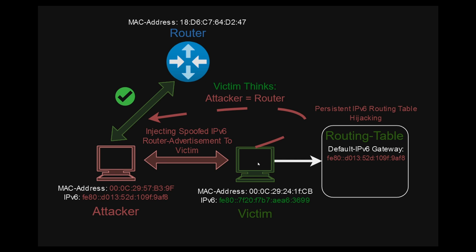What is happening is that the victim will think that the attacker's machine is the router. But actually, via the spoofed packet, the routing table of the physical machine will be manipulated to include the attacker's IPv6 link-local IP address, meaning the IPv6 of the attacker will be the default IPv6 gateway and main prioritized routing table entry.